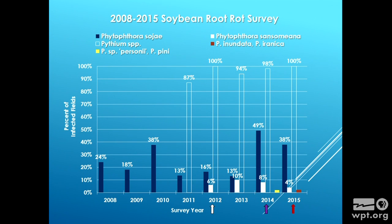When we started looking for Pythium, we realized it is just about everywhere and all the time. There's a lot of Pythium and a lot of Pythium species, and we tried to speciate them, but that's still a lot more work that needs to be done.